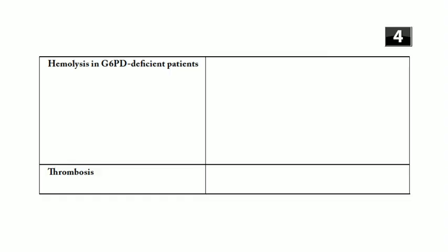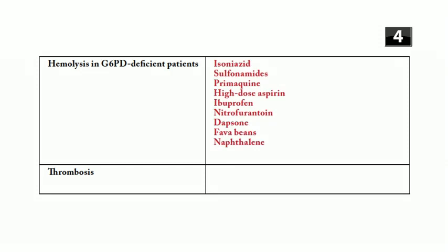Hemolysis in G6PD-deficient patients can be caused by isoniazid, sulfonamides, primaquine, aspirin in high doses, ibuprofen, nitrofurantoin, dapsone, fava beans, and naphthalene. Thrombotic complications are associated primarily with oral contraceptive pills, especially in smokers over the age of 35.